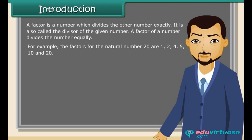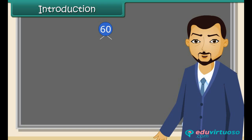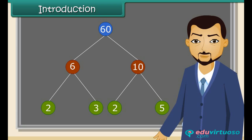For example, the number 11 can be written in two ways, which implies that for any prime number, the factors are one and the number itself. Factors for a given number can also be found using the factor tree method. Here is an example to find the factors of the natural number 60 using the factor tree method.